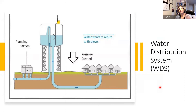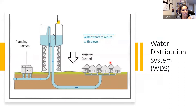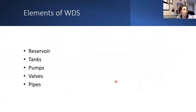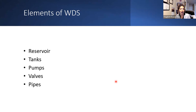Let's focus on the main component for today: the water distribution system. It's a network that receives water from treatment plants and, through some processes, delivers it to our houses. The main elements include reservoirs, tanks, pumps, valves, and pipes. Each one is critically important to the network — if even one isn't functioning correctly, we literally pay the cost.